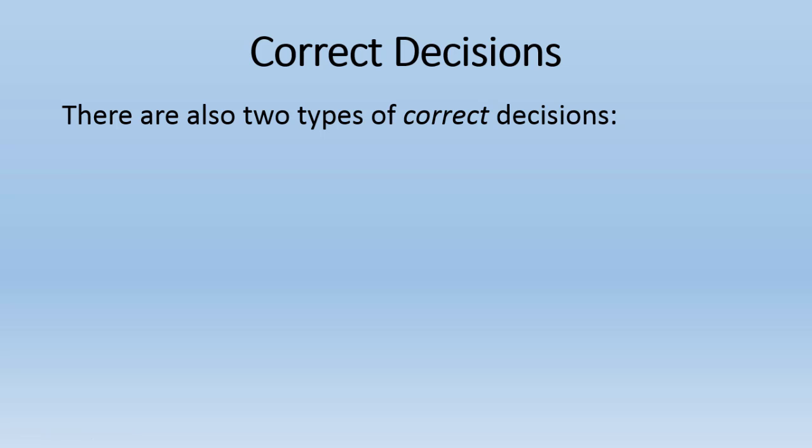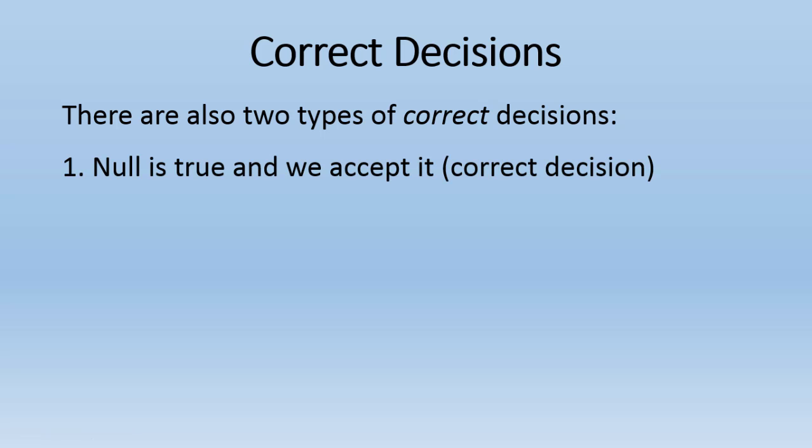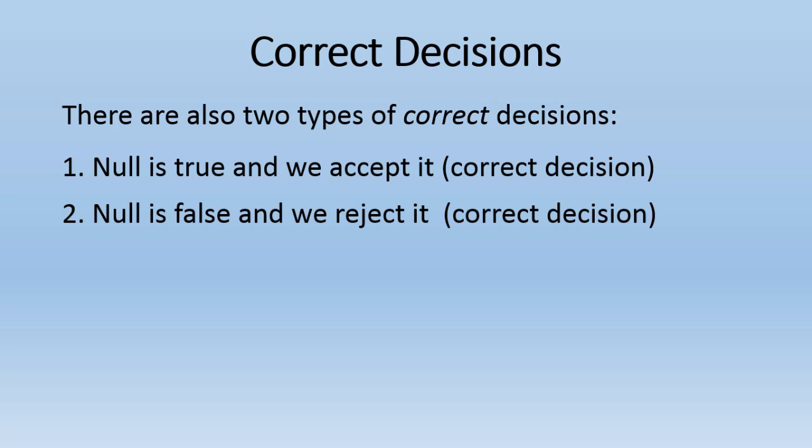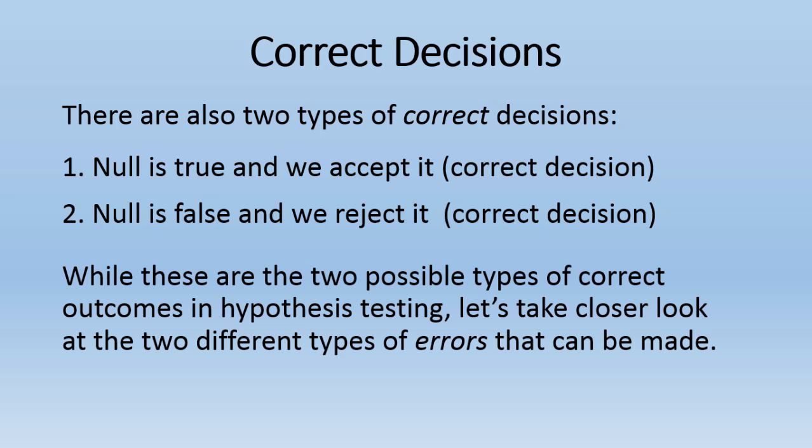There are also two types of correct decisions in hypothesis testing. The first one is the null is true and we accept it — if the null is true and from our test we accept it, then we've made a correct decision. The other scenario is where the null is false and we reject it based on our data, which is also a correct decision. Now let's take a closer look at the two different types of errors.